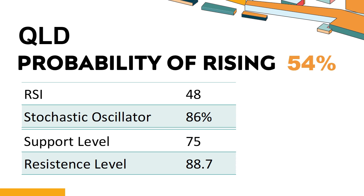Trend Outlook: The probability of QLD share price rising is 54%. When the probability of rising is higher than 50%, the stock has a higher chance of rising. Combining multiple technical analysis indicators, QLD has four bullish signals and four bearish signals. QLD's short-term support level is 78; if it falls below 78 during the session, it will have a chance to test 75.